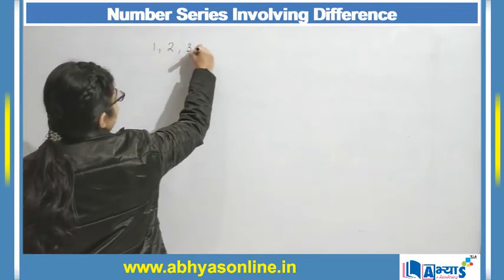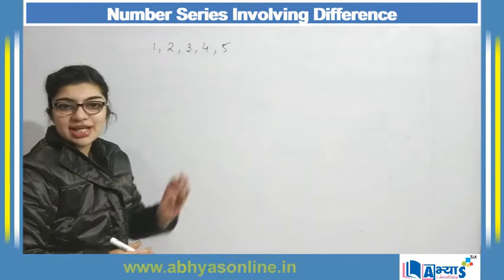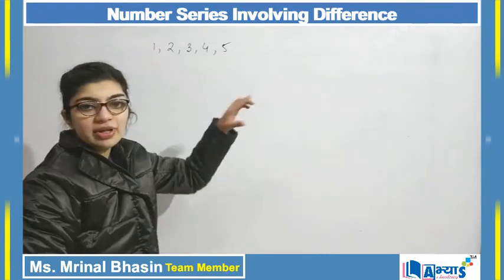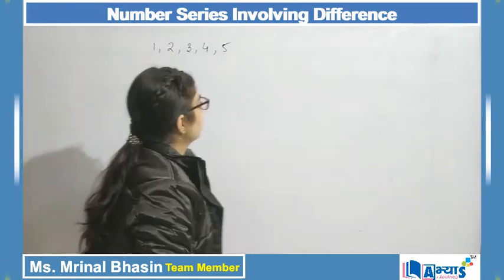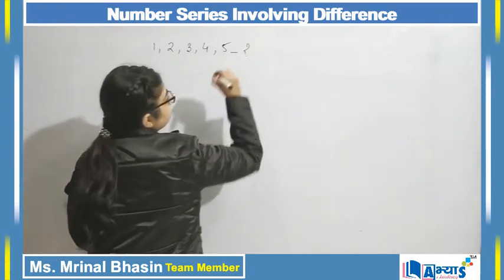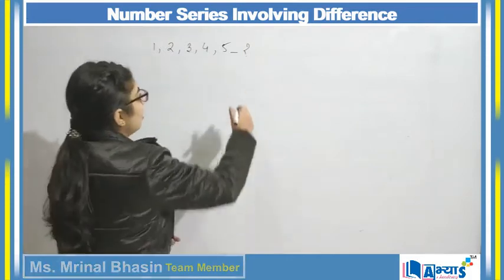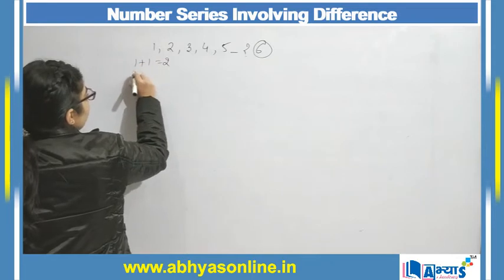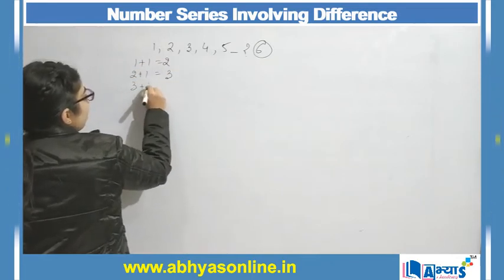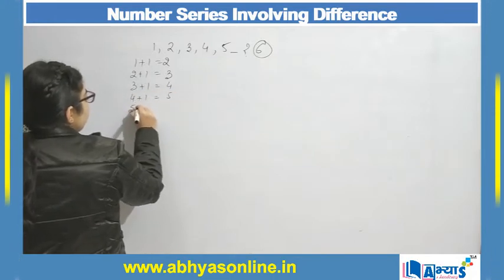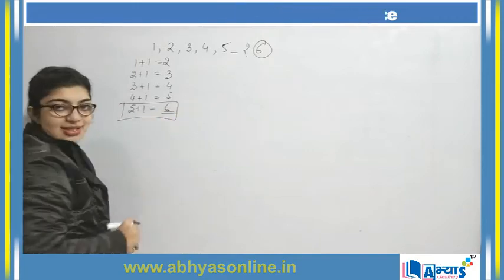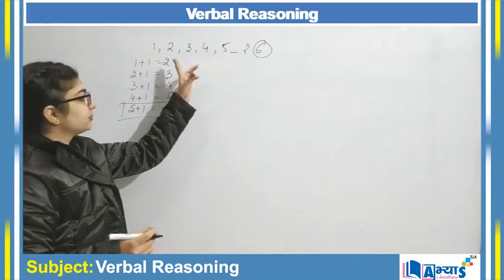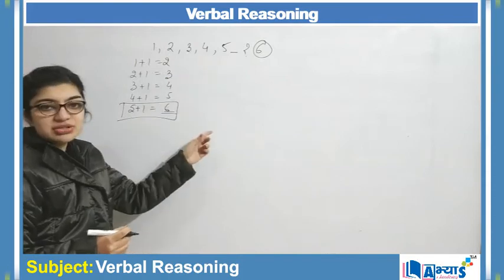For every series there is a pattern. For example, a simple pattern is 1, 2, 3, 4, 5 — nothing can be as simple as this. As a whole it is considered to be a series, but on an individual basis each element is referred to as a term. What will be the next number? We all know the next number will be 6, but on what basis? It is because 1+1=2, 2+1=3, 3+1=4, 4+1=5, and 5+1=6. So a certain pattern is formed — one is being added to each term.